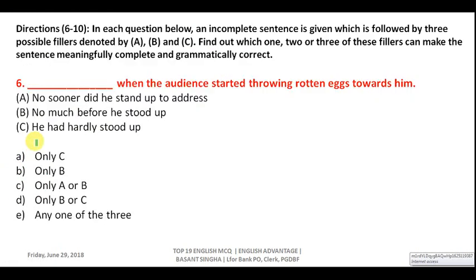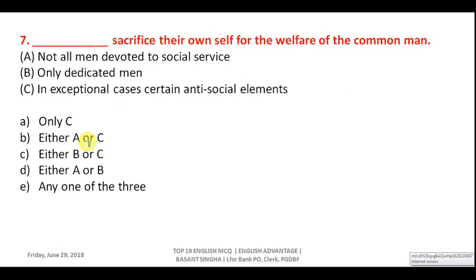Question six is a fill-in-the-blank sentence: 'When the audience started throwing rotten eggs toward him...' No sooner is paired with 'than,' so it won't work here. 'Not much before' also doesn't fit. 'Hardly' is combined with 'when,' so this is the correct choice. Answer is C.